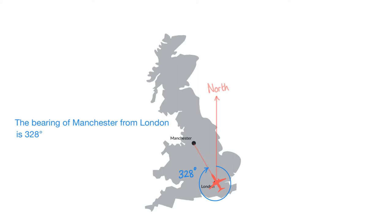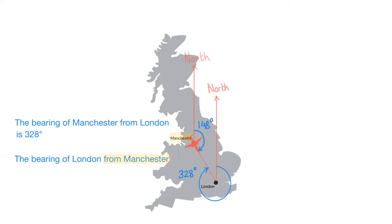For bearings we always work clockwise from north. Now imagine you were in Manchester and wanted to travel to London. To work out the bearing of London from Manchester we draw a line pointing north from Manchester and then measure the clockwise angle until we are pointing at London. That angle is 148 degrees, which means the bearing of London from Manchester is 148 degrees.